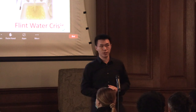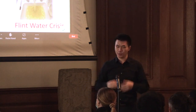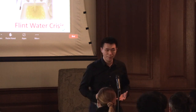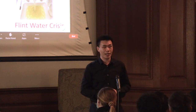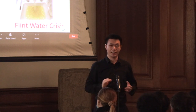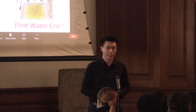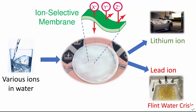Some ions are useful resources, so we want to recover them — like the lithium ion, which is essential for many electric devices and green energy nowadays. Some are, however, harmful to human beings. For example, the lead ions — we definitely want to remove them from drinking water to avoid the tragedy of the Flint water crisis.